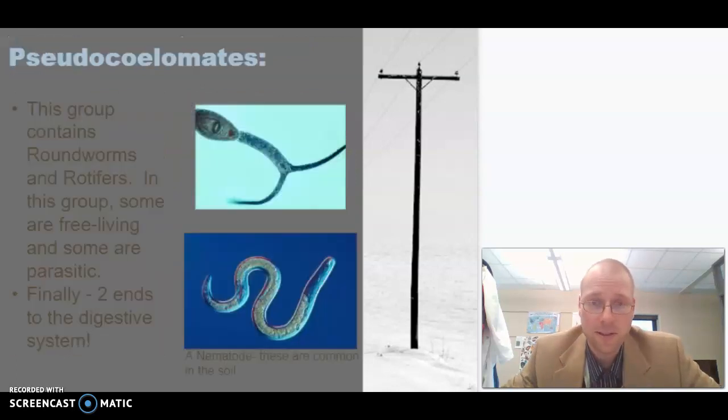The next group are the pseudocoelomates. Pseudo meaning fake, false, lying. So the pseudocoelomates do have that kind of an opening layer between their outside parts and their guts parts, but it's not a true pseudocoelom, like what we would have, that true opening. The things in this group are the roundworms and the rotifers. Again, you have some that are free-living, so they swim around and do their own business, and some that are parasitic. And finally, we get digestive systems with two ends.